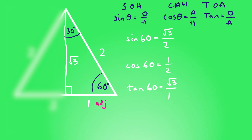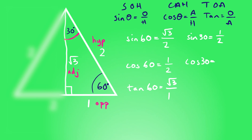Now let's focus on the 30-degree angle and relabel the triangle accordingly. The opposite becomes the length of one, the hypotenuse remains two, and root three becomes the adjacent. So sine 30 equals opposite over hypotenuse: one over two, which is a half. Cos 30 equals adjacent over hypotenuse: root three over two. And tan 30 equals opposite over adjacent: one over root three.